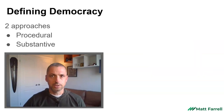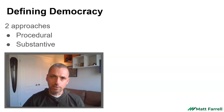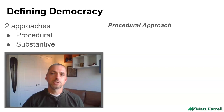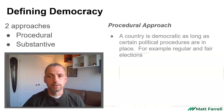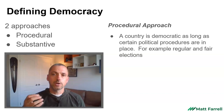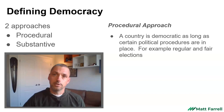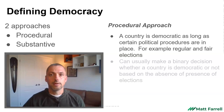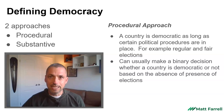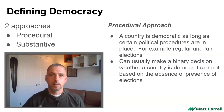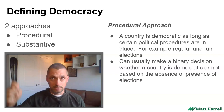When we're trying to define democracy, there are a number of different ways of doing it because it can be a pretty complicated thing. One approach is what's called the procedural approach, and this is a rather simplistic way of looking at it. It basically looks for democratic procedures, and if a country has democratic procedures like elections, then it is considered democratic. It's a binary choice — you're democratic or you're not based on the presence of things, so it's almost like a checklist.